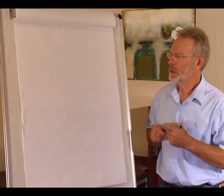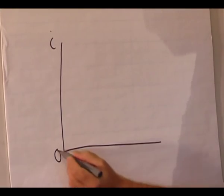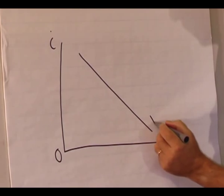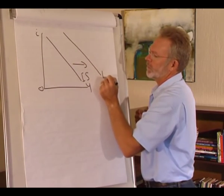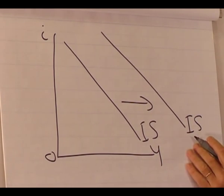Well, we know when governments spend more, autonomous spending in the economy increases. And we know that an increase in autonomous spending will shift the IS curve to the right. So the IS curve shifts from this position to this position.